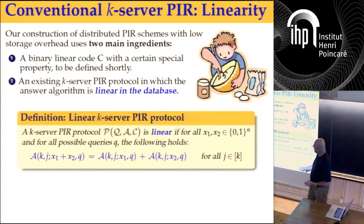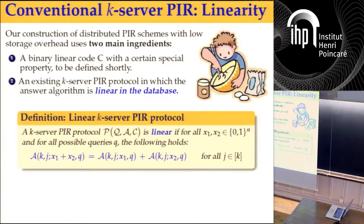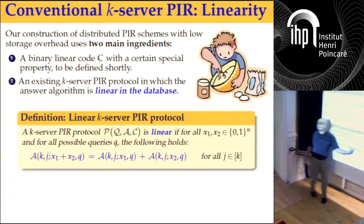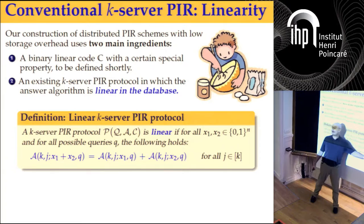What do I mean exactly by linearity? This is answer linearity. If I give the answer algorithm any fixed query Q and the database string is a sum of two things X1 and X2, then the answer splits linearly — it can be brought inside the sum. This notion has apparently been around in the literature.